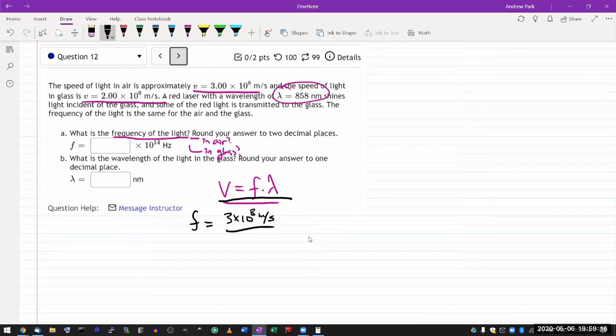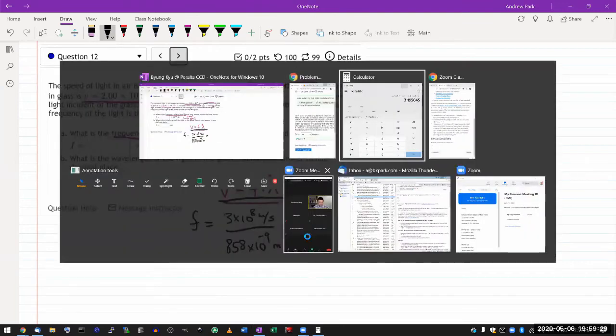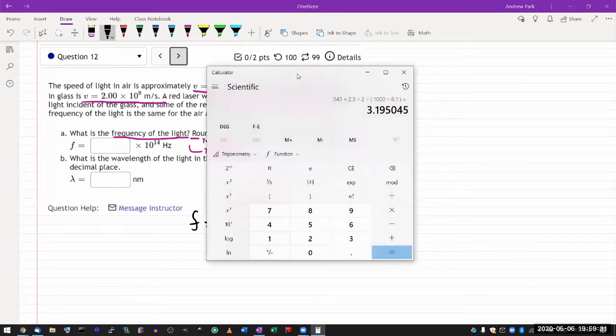850 nanometers. I'm realizing that's infrared, that's not light red. 858 times 10 to minus nine nanometers. And when you work out those numbers, this is what you get.